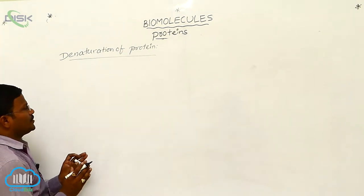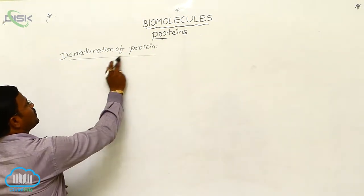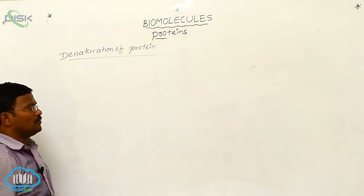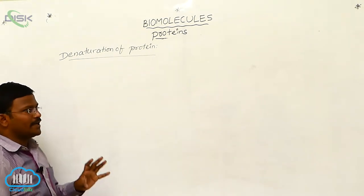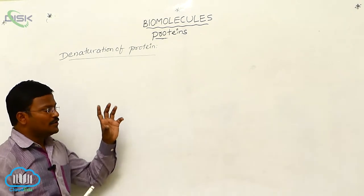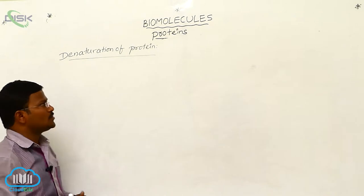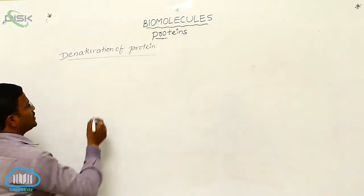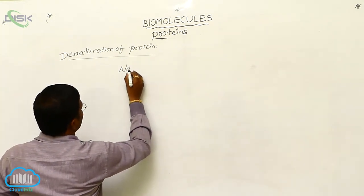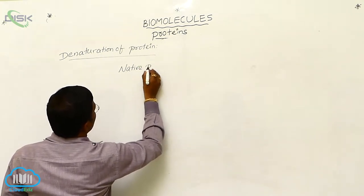An important area of protein is denaturation of protein. All proteins have a typical three-dimensional structure and show their physiological effect on the biological functions of living organisms. This state is called native protein.